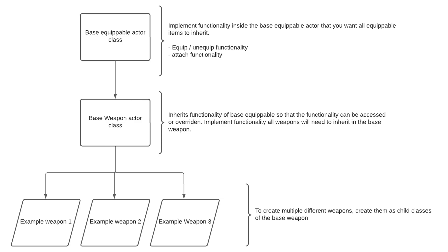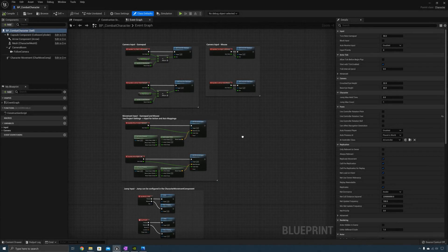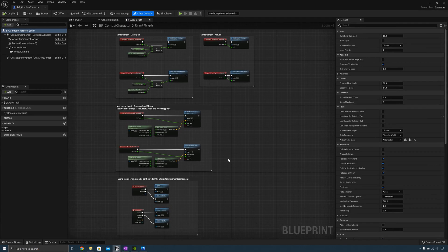In the base weapon actor class, we can override the variables and functions created in the BaseEquipable class to create specific functionality for weapons. For example, you can override equip and unequip functions to give specific functionality to the base weapon, so the weapon can call its own version of these functions. Created as child classes of the BaseWeapon class would be different weapons — there would be a different child class for every weapon item in your game. If some weapon requires modified functionality, you can also override and modify functions as needed. Now let's go into the engine and start implementing this.